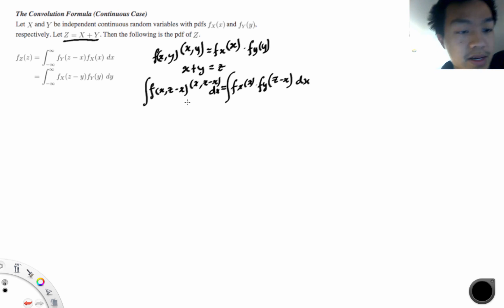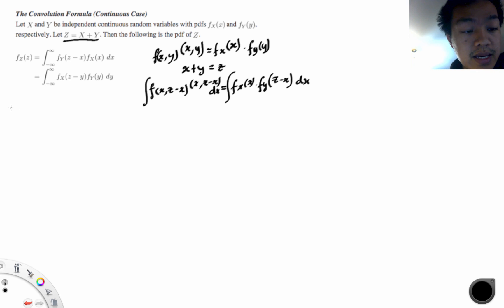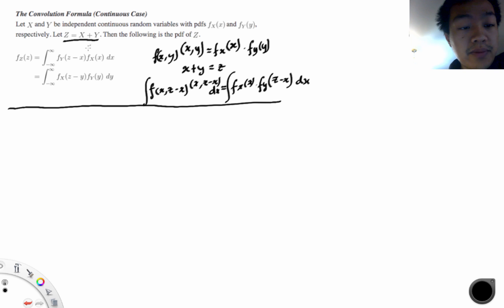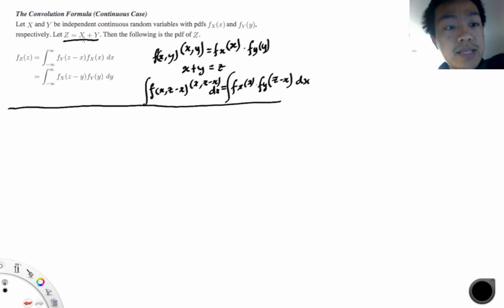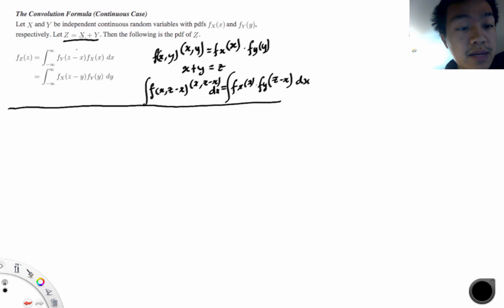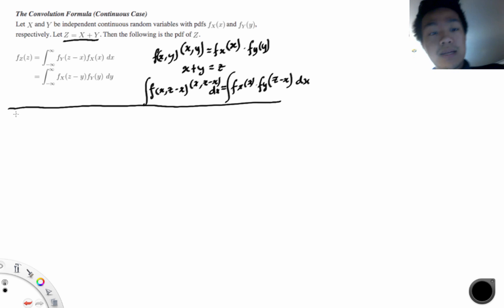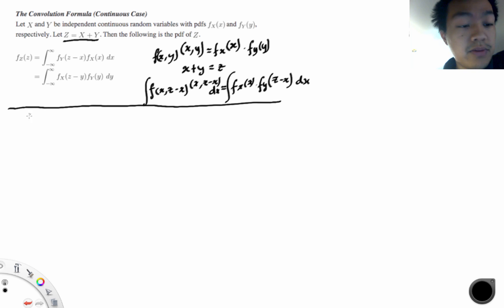Let's go to an example. You would use the convolution theorem any time you're looking for the density distribution of x plus y, where z means x plus y. Also importantly, x and y have to be independent random variables.